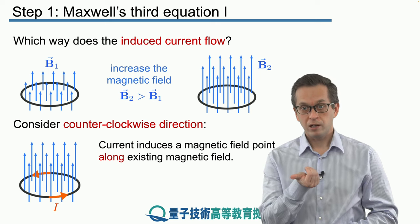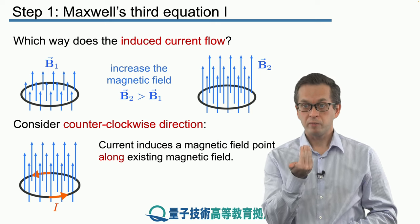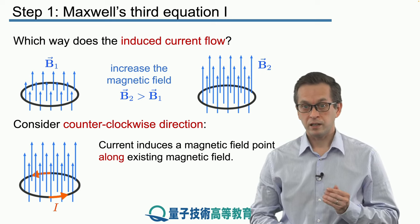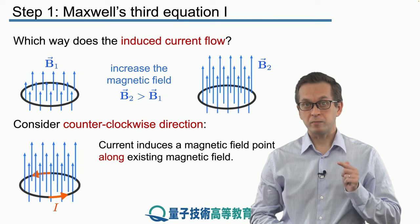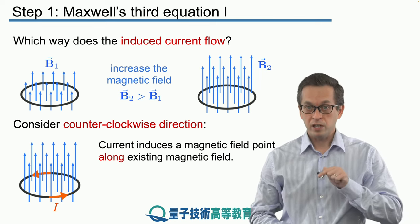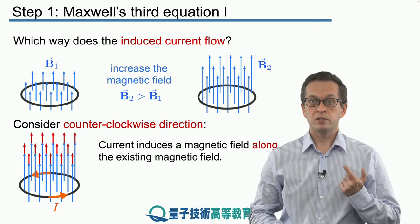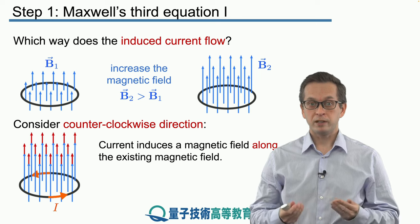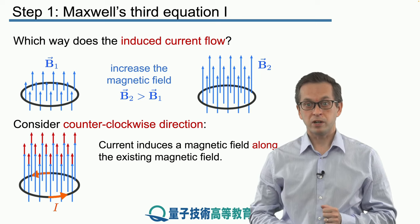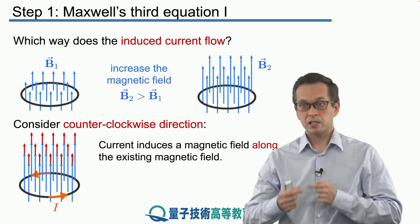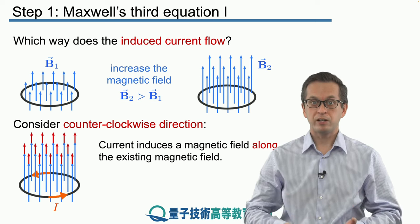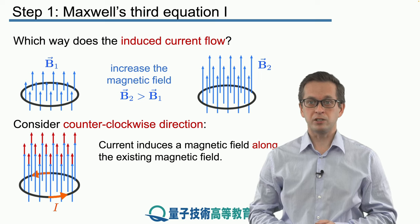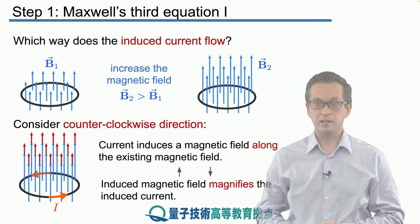If the current is going counterclockwise, the magnetic field is also pointing up. So the induced current also induces a new magnetic field. We are increasing the strength of the magnetic field, but by doing that, we increase the strength of the current in the loop. This creates a positive feedback loop, increasing current and magnetic field. Basically, we are getting energy out of nowhere, so we know this cannot be the case.